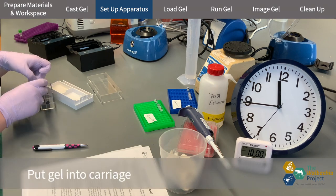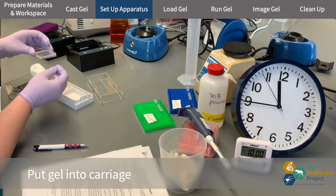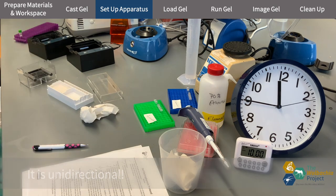With the Mini One system, there's only one way the gel goes in and the combs should always be towards the top negative end of the carriage.